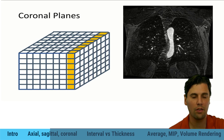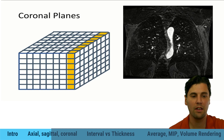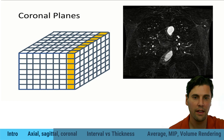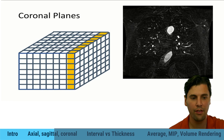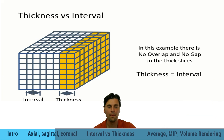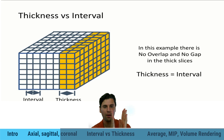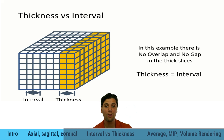Here's an example of coronal slices of the chest. These coronal slices on the right are advancing, so you can see the anatomy changing slightly as we step through them. These are the native thickness or thin-slice images. As we step through those images, the thickness equals the interval — there is no overlap. We have two images together with no overlap, showing one image and then the next.